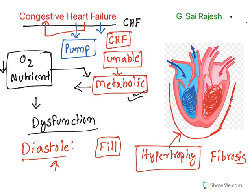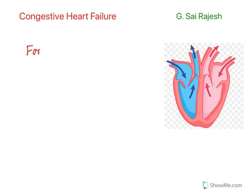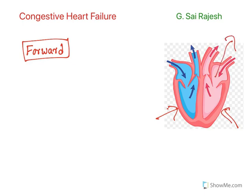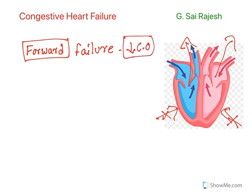Along with this, there are certain other terms like forward failure and backward failure. Forward means whenever systole occurs, whenever the heart contracts, blood comes out of the heart — this is the forward movement of blood. When due to heart failure, systole is not working properly, forward failure occurs. That means the heart could not pump out the blood, resulting in a decrease in cardiac output.